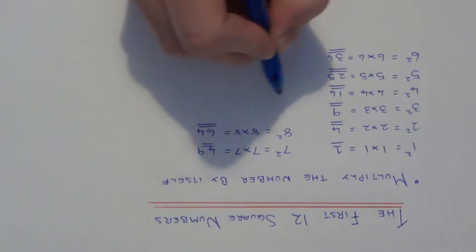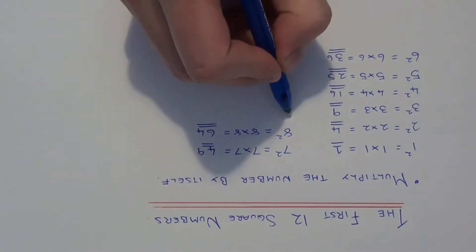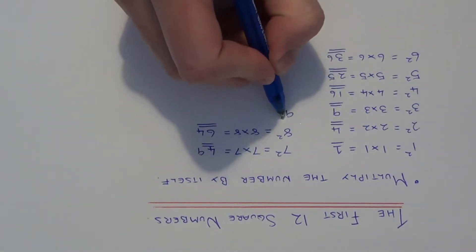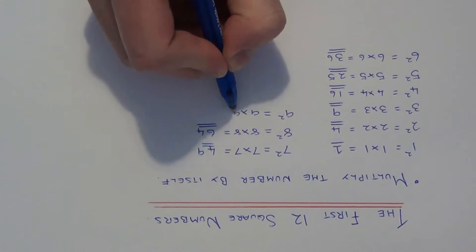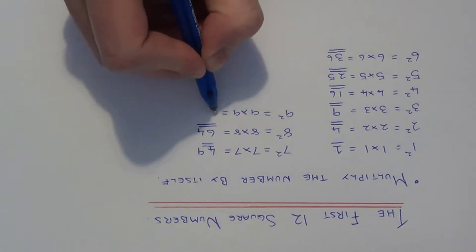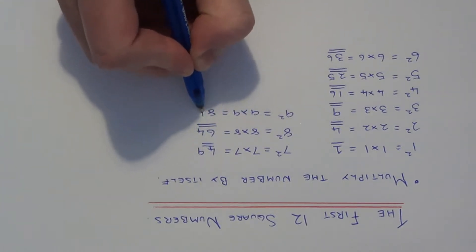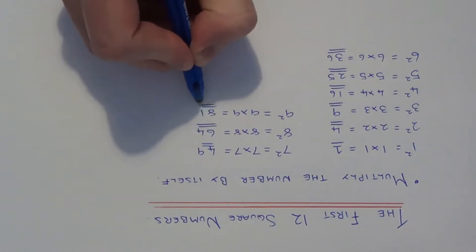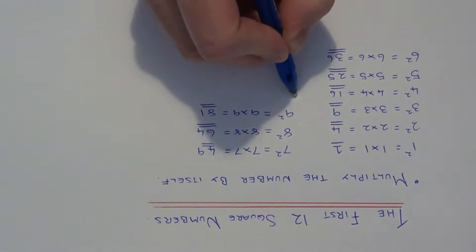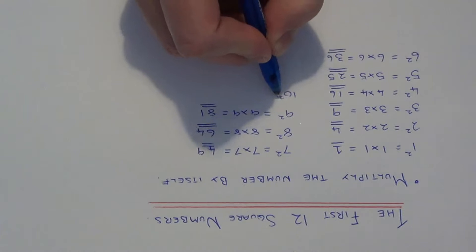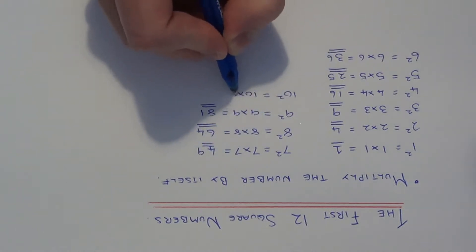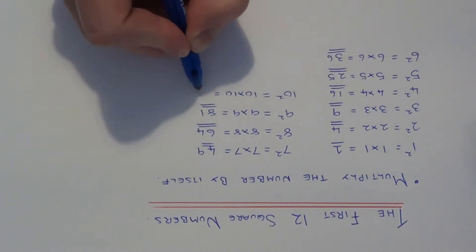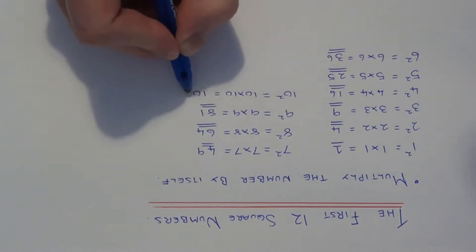So that's your eighth square number. The next one is 9 squared, which is 9 times 9, which gives 81. The next one is 10 squared, which is 10 times 10, which gives us 100.